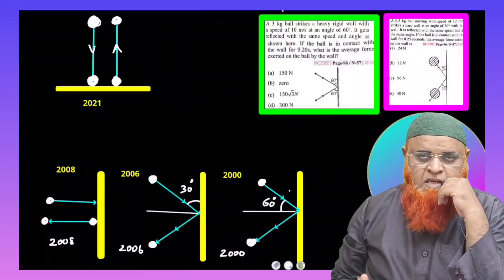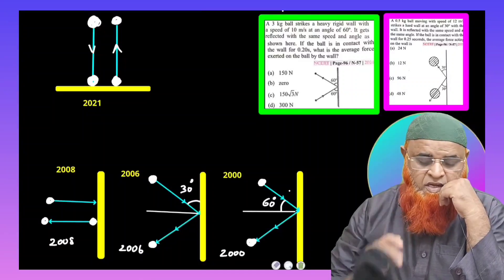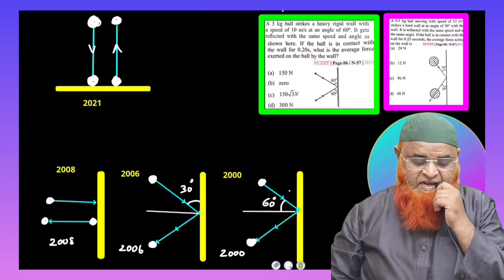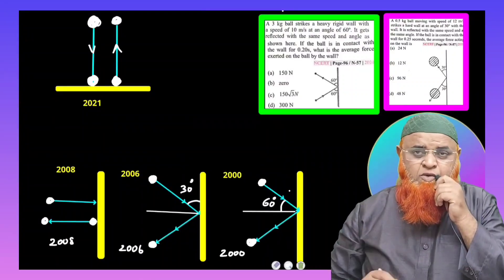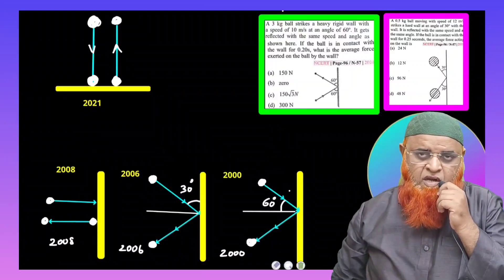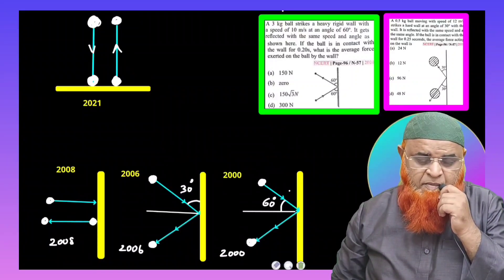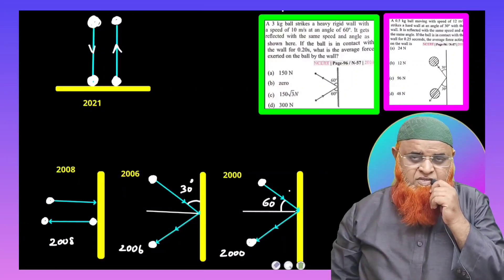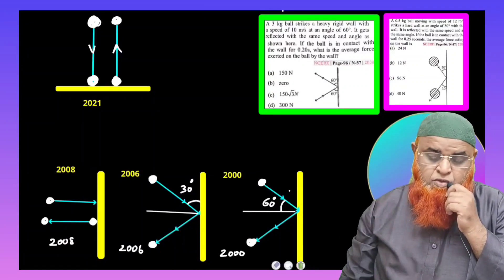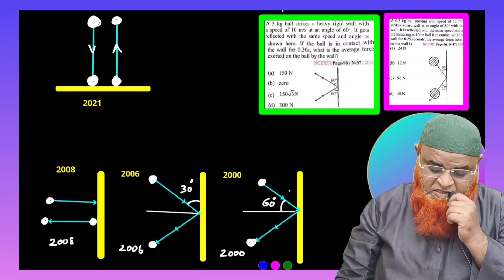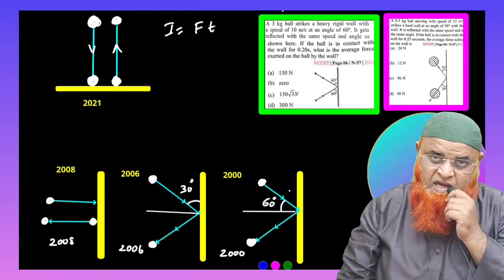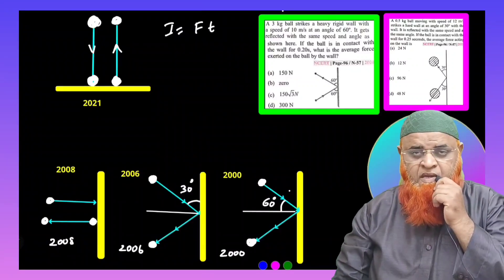This type of problem has been asked in NEET for 4 years continuously — in 2021, 2008, 2006, and 2000. This is the concept of impulse. Impulse is nothing but a very large force acting in a very short interval of time. Examples are hitting a ball with a bat, or hitting a nail with a hammer — the contact lasts only a fraction of a second.